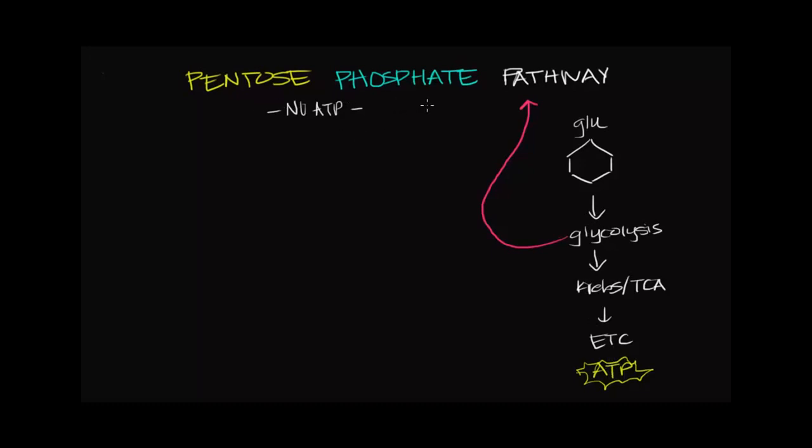As you can see, I've written pentose phosphate pathway by highlighting pentose and phosphate in different colors to point out that there are two primary products in this pathway. So the first is the production of a five-carbon pentose sugar. So pentose is just another word for five-carbon sugar.